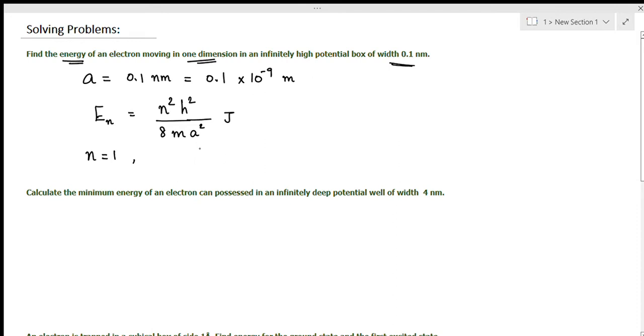Substituting the values: n² = 1², Planck's constant h = 6.625 × 10⁻³⁴ squared, divided by 8 times the electron mass 9.1 × 10⁻³¹, times a² = (0.1 × 10⁻⁹)².